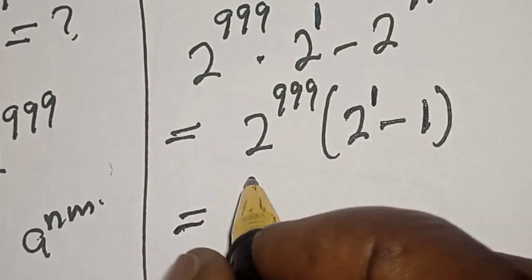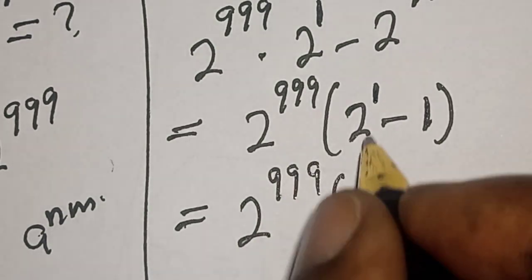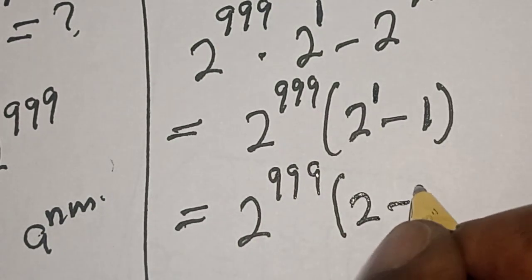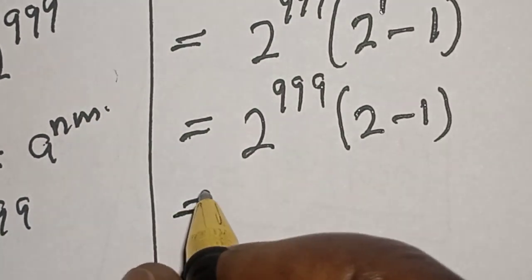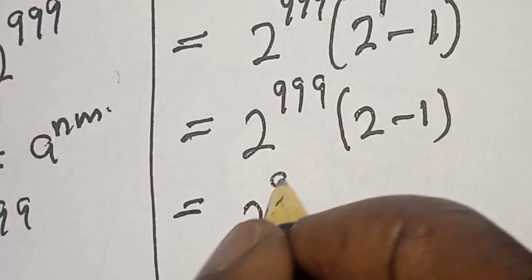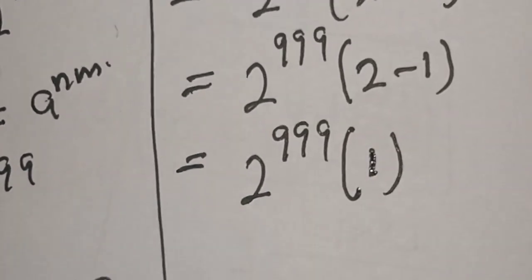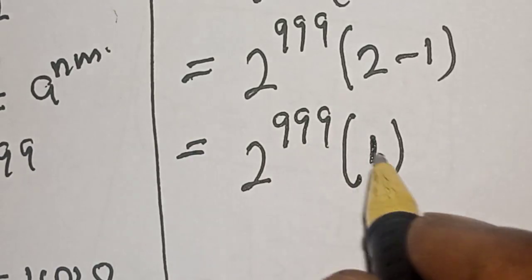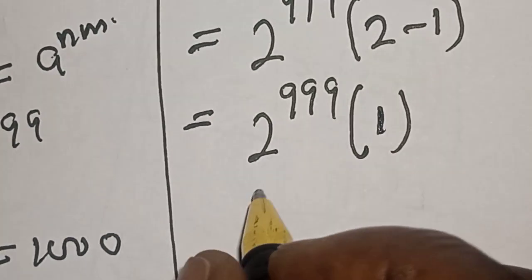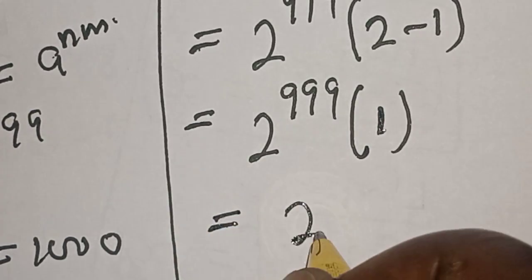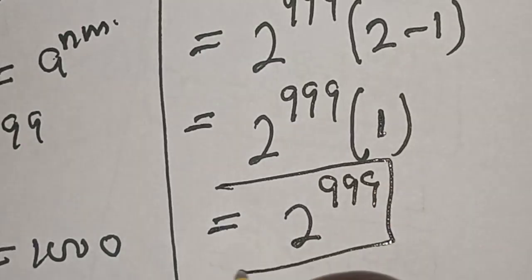Then this is equal to 2 raised to power 999 into 2 raised to power 1, which is the same as 2 minus 1. This gives 2 raised to power 999 multiplied by 1, which equals 2 raised to power 999. That is our final answer: 2 raised to power 999.